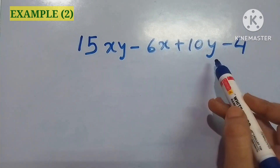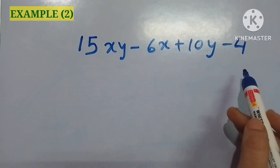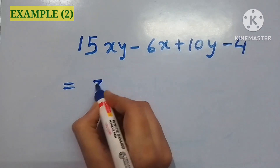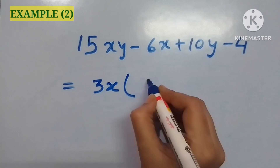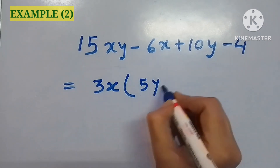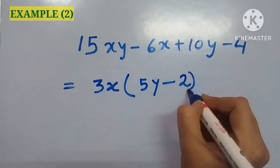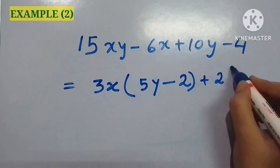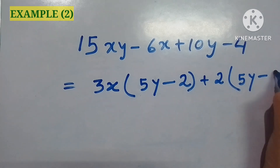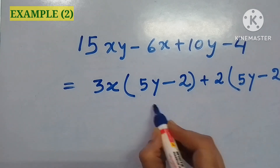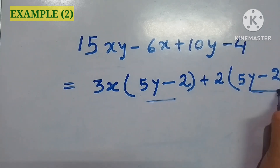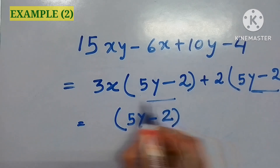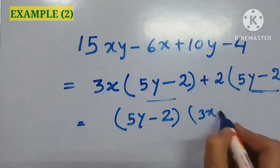In my next example, 15xy minus 6x plus 10y minus 4. From the first two terms I am taking 3x common, and 5y minus 2 is left. From the last two terms I am taking 2 common, and again 5y minus 2 is left. So from both groups I am taking 5y minus 2 common and getting the required result by factorization.